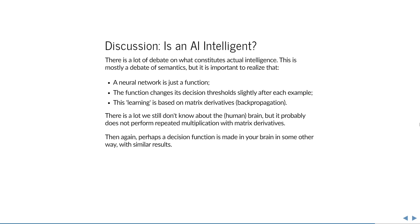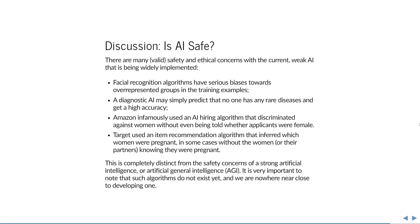A question that very often arises is whether artificial intelligence is safe. There are many valid concerns regarding the safety and ethics of current weak AI. For example, facial recognition algorithms almost always have very serious biases toward overrepresented groups in the training examples — a clear example being the HP printer that didn't recognize people with darker skin, because the training set mostly consisted of people with white skin color. There were also Nikon cameras that kept asking Asian users whether they were blinking. These can have very unwanted side effects.